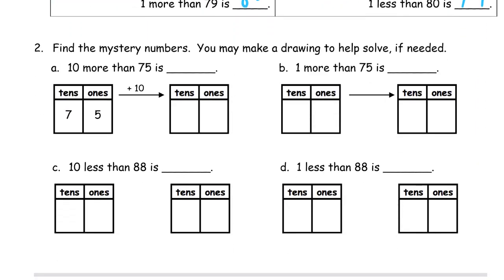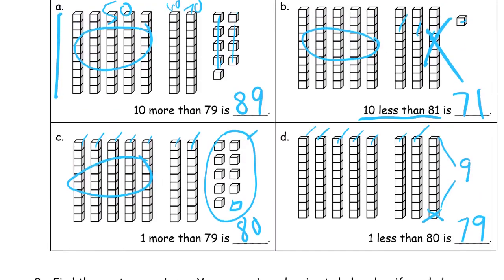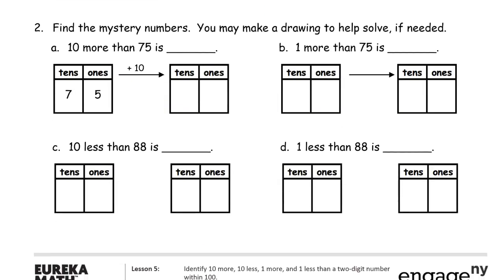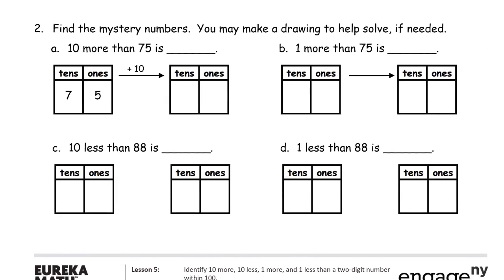Find the mystery numbers. You may make a drawing to help solve if needed. And that a drawing would look something like those quick tens and ones, by either adding or crossing out. And the first one here says 10 more than 75. Well, we need one more ten. If we have seven tens, and we're adding one more ten, we're going to have eight tens, and five ones. So that's 85.